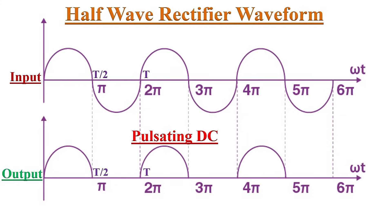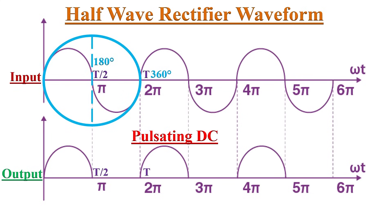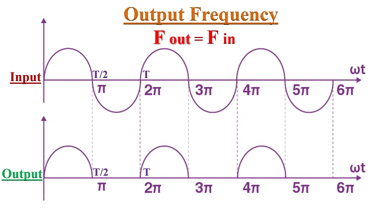Here the half-wave rectifier waveforms on the input side and pulsating DC output after rectification are shown. A cycle can also be specified in terms of angular measurement; in that case one complete cycle is spread over 360 degrees or 2π radians, so a half-cycle is 180 degrees or π radians.